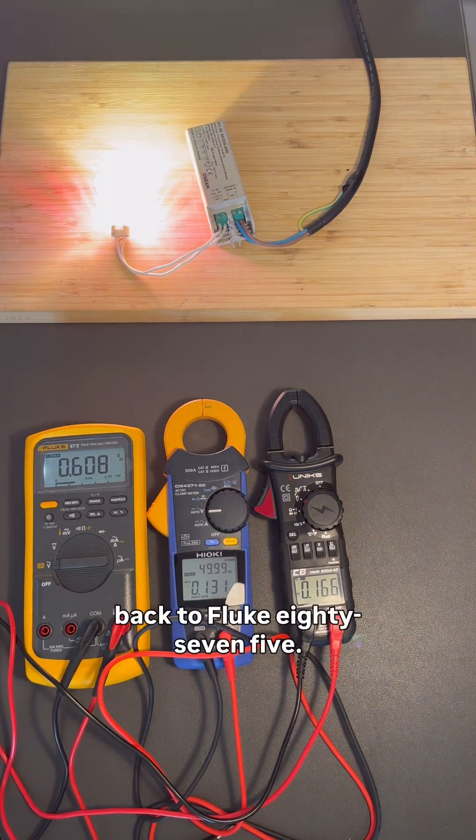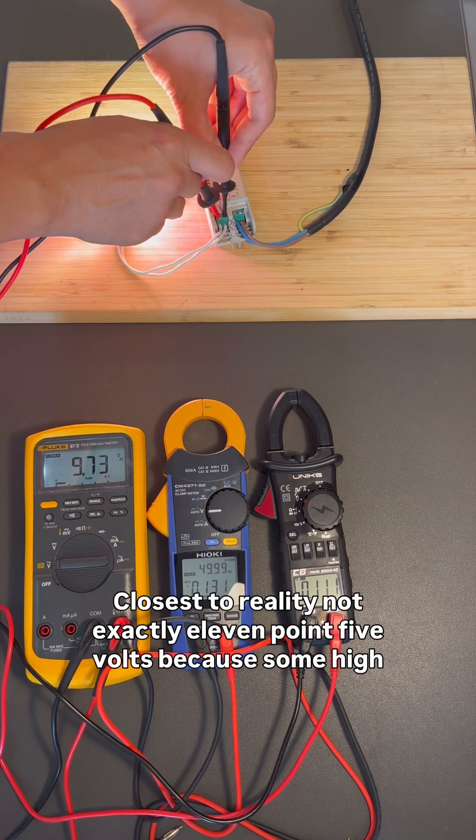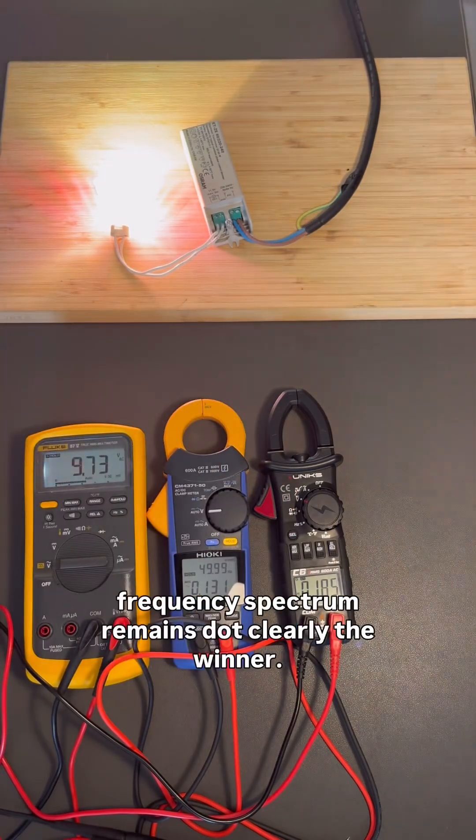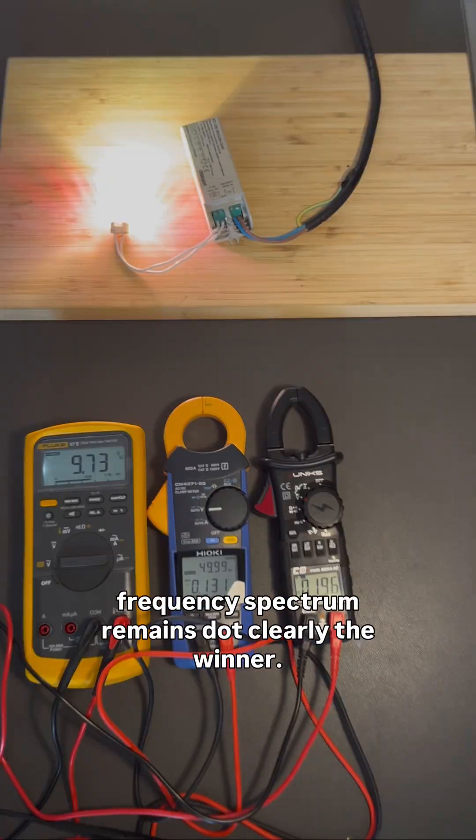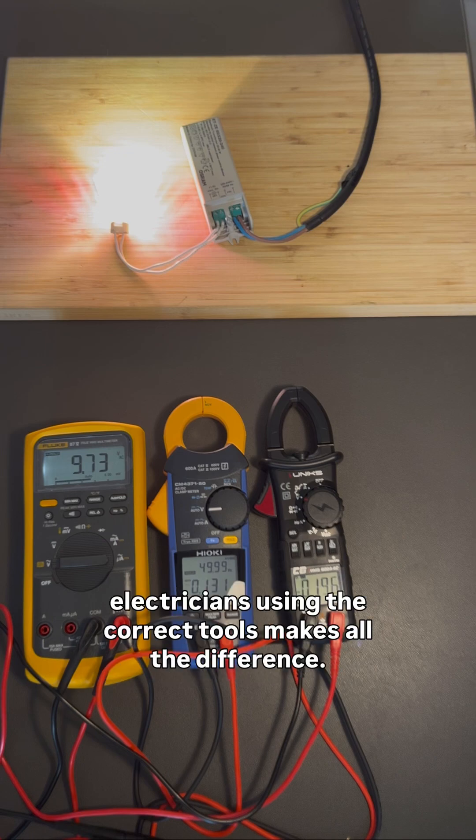Back to Fluke 87-5. Output, 9.75V. Closest to reality. Not exactly 11.5V, because some high frequency spectrum remains. Clearly the winner. Important lesson: choose quality equipment with the right bandwidth. As electricians, using the correct tools makes all the difference.